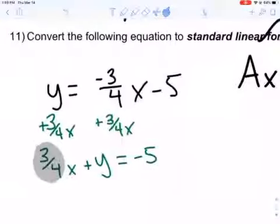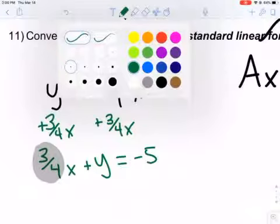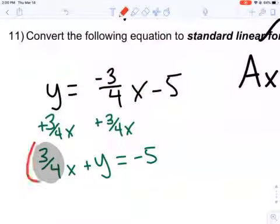There we go. All right. How do I clear the fraction? I'm going to multiply everything by the denominator, which is 4 here. Multiply everything by 4.